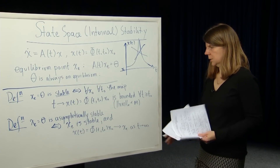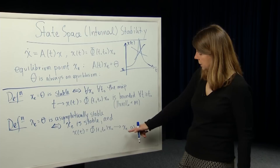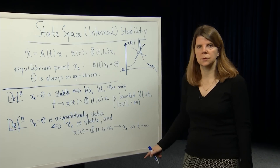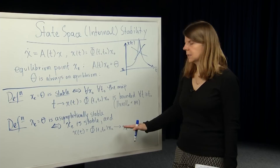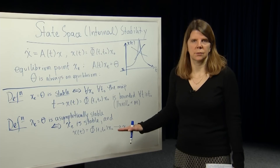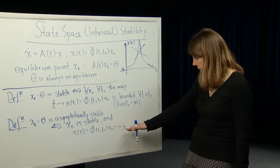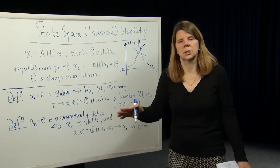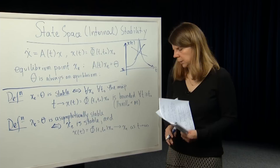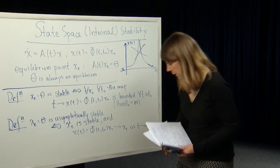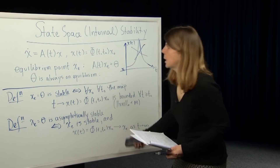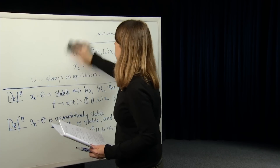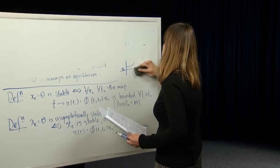This second definition requires that the trajectory converge to the equilibrium point as t goes to infinity, but it doesn't say anything about the rate of convergence. It may converge very, very slowly. Our third and last definition relates to the rate of convergence.